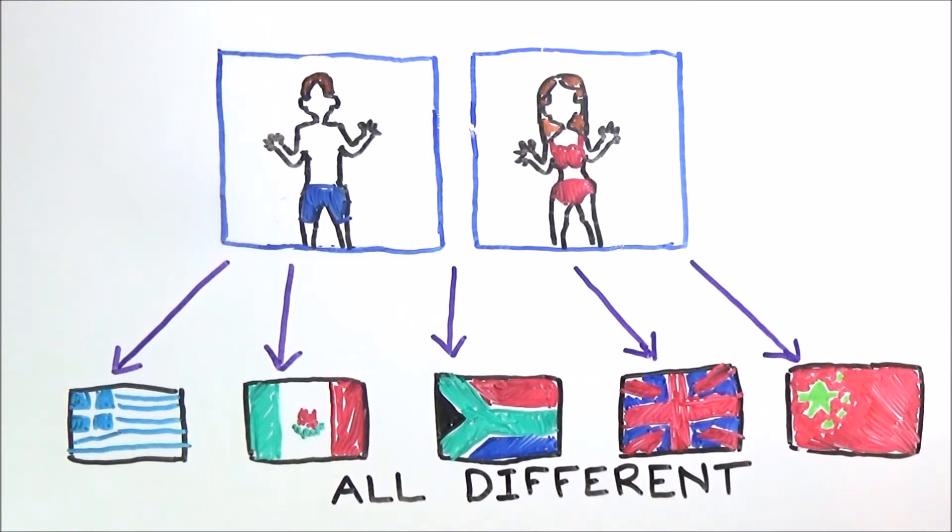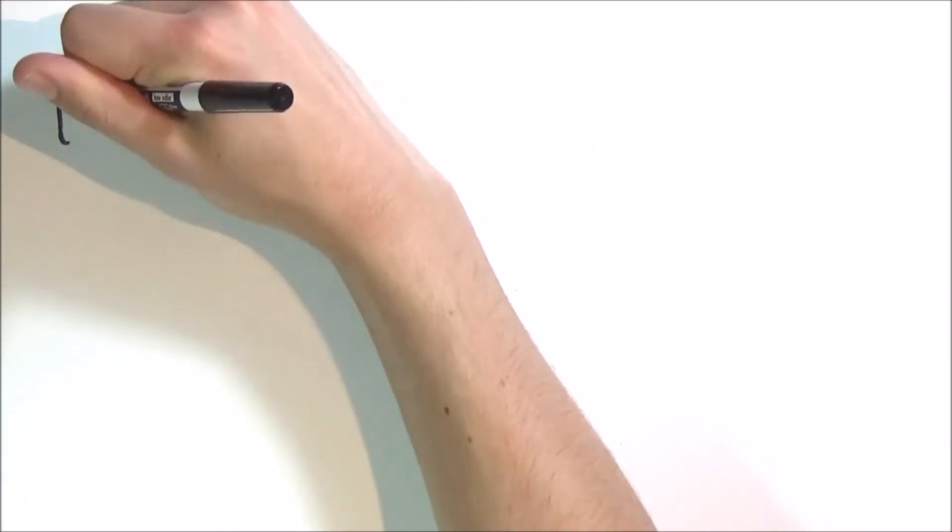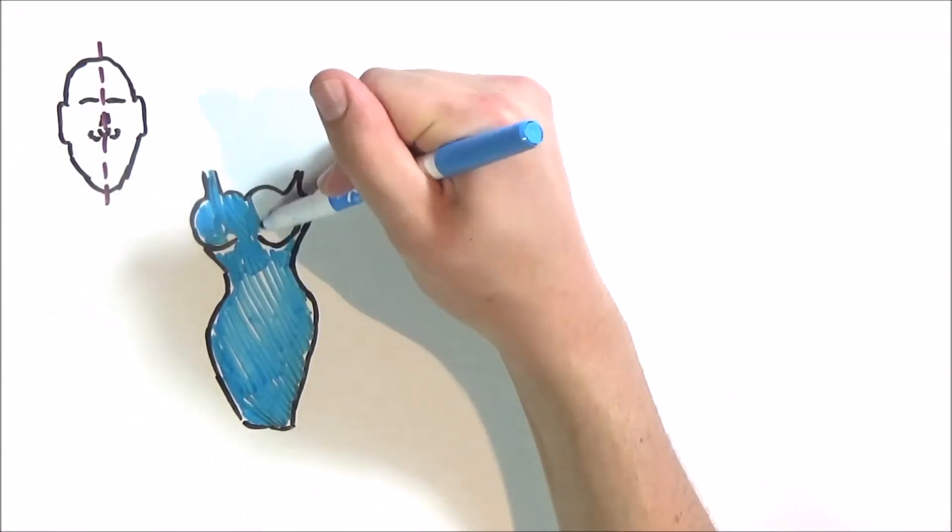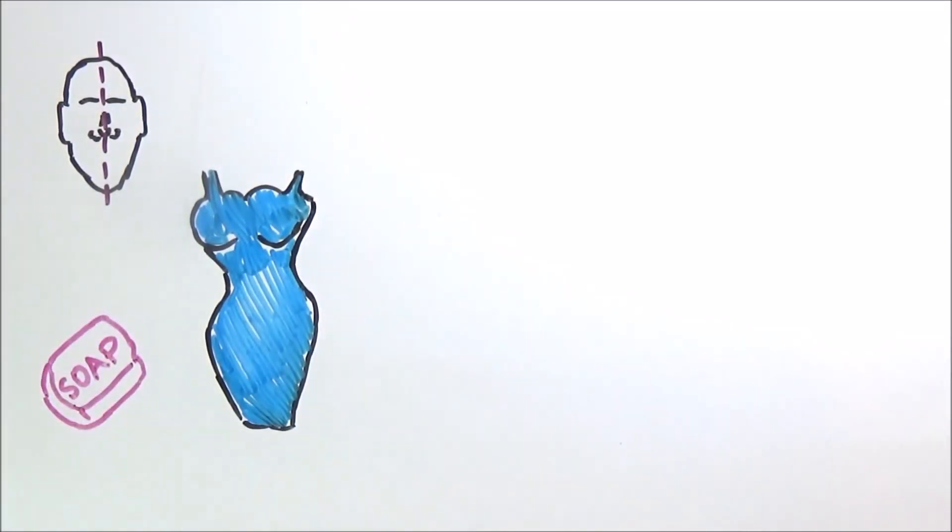Even though there are differences in beauty ideals in different cultures, anthropologist Helen Fisher says that there are also some universals, including smooth skin, a symmetrical face, wide hips, and a general appearance of health and cleanliness.